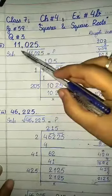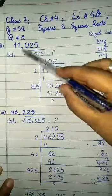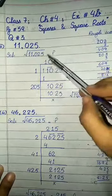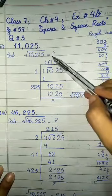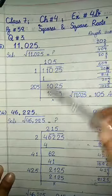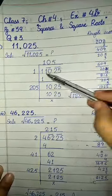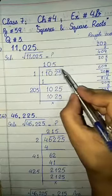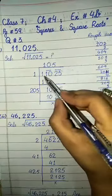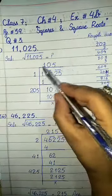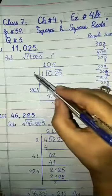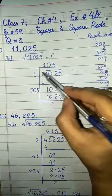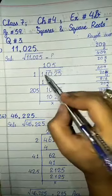Next we have part number 2: 11,025. First, write the solution with a square root sign and a question mark for the answer, then place the long division sign and write the number. Now pair from the right side: 25 is one pair, 10 is one pair, and 1 is a single digit left over — no issue. Now find the close answer for the first period, which is 1. This is our first period, and 10 and 25 are the second and third periods.